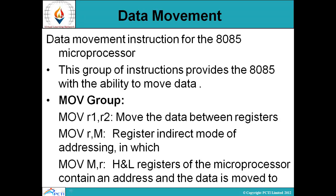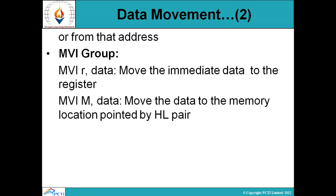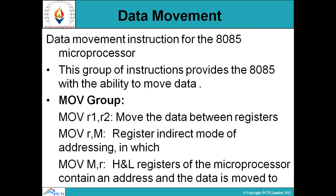MOV R, M means we are addressing M into R using indirect mode. MOV M, R uses the H and L registers of the microprocessor, which contain an address, and data is moved to or from that address. The H and L registers contain the address used for the move operation.